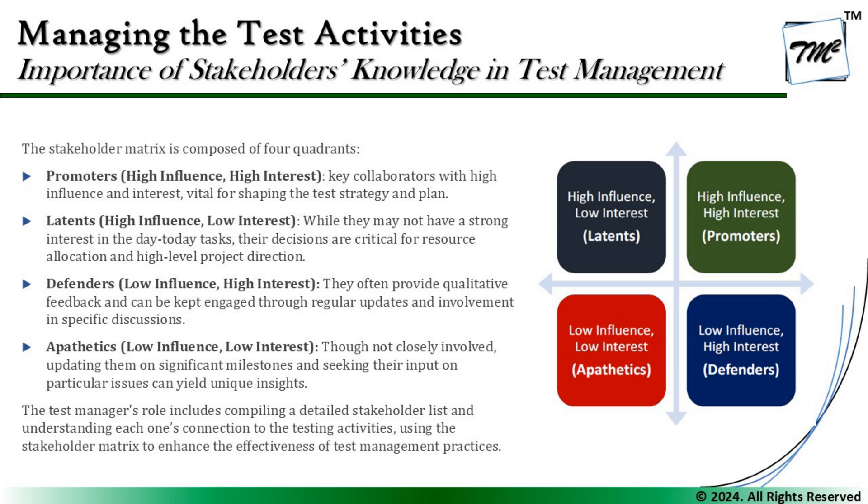The second group is called Latents, who have high influence but low interest. While they may not have a strong interest in your day-to-day tasks, their decisions are critical for resource allocation and high-level project direction. These are people such as executive management and project leadership — they have high influence in determining what testing happens and how, but they may not be interested in your day-to-day activities.